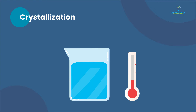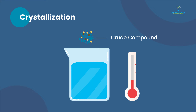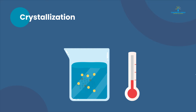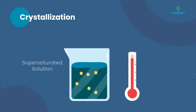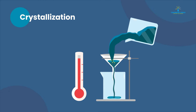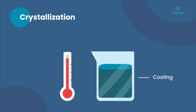First is crystallization. Crystallization is performed when the desired compound is solid. In this process, the reaction mixture is dissolved into a solvent to prepare a saturated solution. Then it is heated until the entire mixture gets dissolved. Then we keep it in a cool place and crystallization takes place.